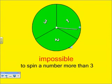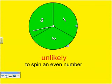It is impossible on this spinner to spin a number more than three. We have zero possibility out of three chances of spinning a number more than three. There are no numbers more than three, so it is impossible to spin a number more than three.